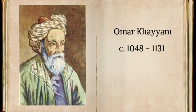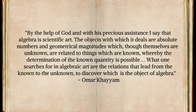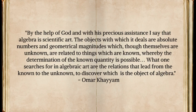Perhaps more important than his work on cubic equations was his view on algebra. Omar Khayyam writes that algebra is a scientific art. The objects with which it deals are absolute numbers and geometrical magnitudes which, although themselves are unknown, are related to things which are known, whereby the determination of the known quantity is possible. What one searches for in algebraic art are the relations that lead from the known to the unknown to discover, which is the object of algebra.